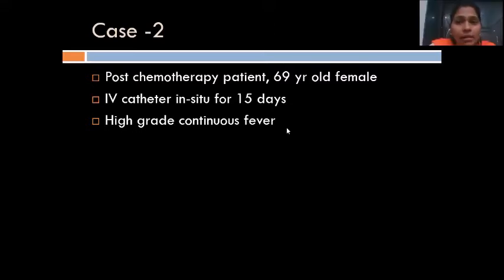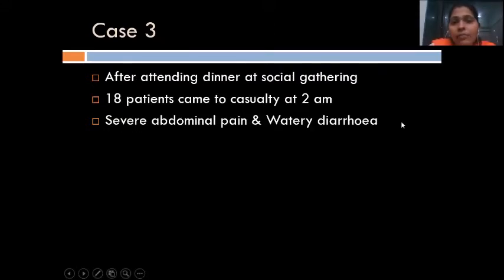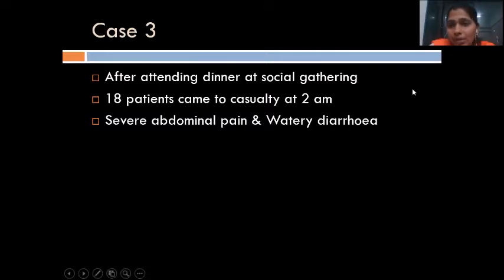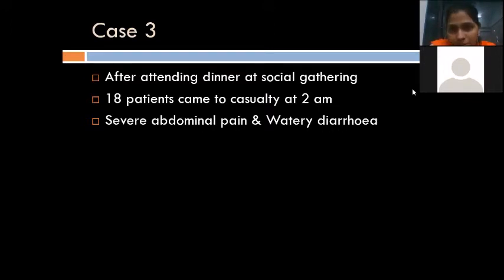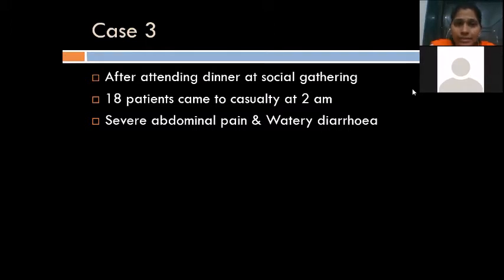Case 3: after attending a dinner at a social gathering, 18 patients came to the casualty of the hospital at 2am with severe abdominal pain and watery diarrhea. The complaint was the same for all patients. Since all of them ate at the same place, the source is the same — they have a GI infection. This is food poisoning.